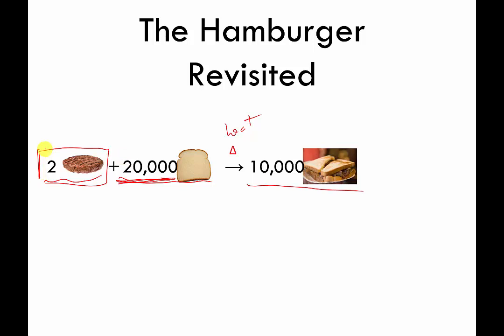She says we can't make 10,000 sandwiches with what we have. So I ask how many we can make, and she says two — that's it — because we only have two patties. Doesn't matter how much bread you have; if you only have two patties, most of that 20,000 slices of bread is just going to go to waste. What she has just described is called a limiting reagent problem in chemistry.